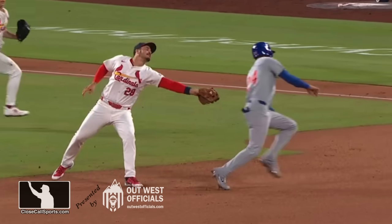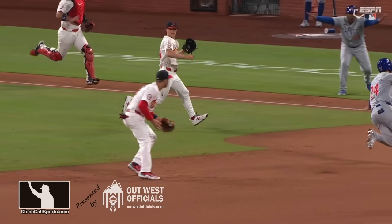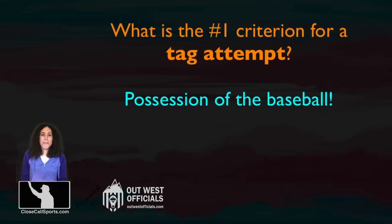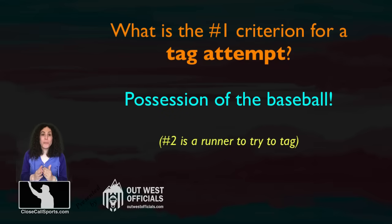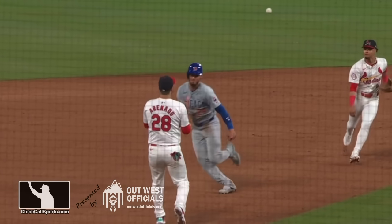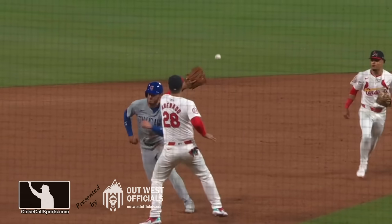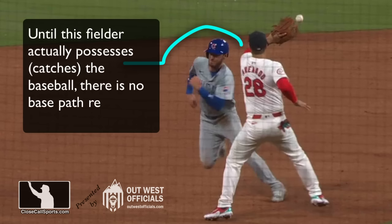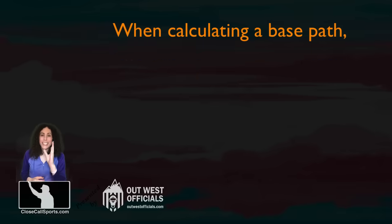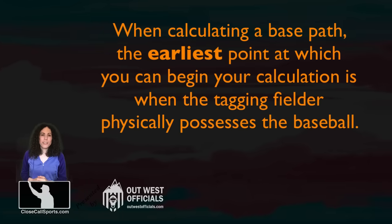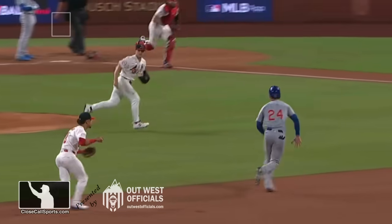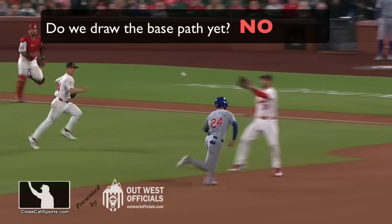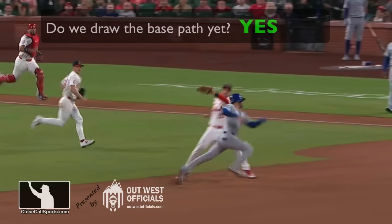Very important to remember: for a tag attempt, you need to possess the baseball first. So while the ball is being thrown in the air during a rundown, until the player who is actually going to make that tag attempt possesses the baseball, you do not have a tag attempt, and thus the base path cannot be calculated yet. As soon as that ball is caught and the fielder begins the tag attempt, draw the line at that time, but not a second earlier.